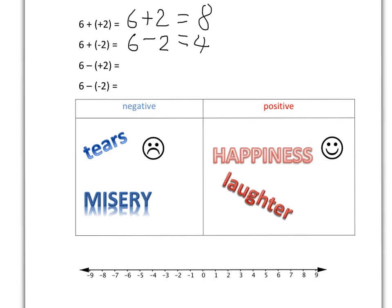Next, if I take away the positive stuff — taking away happiness and laughter from my life — obviously my life is getting less. I'm taking away from my life. And then the last case: if I take away the negative stuff — get rid of the misery, the tears, the unhappiness — obviously my life is getting better, it's like I'm adding to my life. So taking away the negative is like adding. That's the little trick to help you remember how to do things.